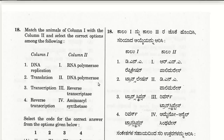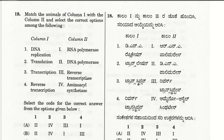The eighteenth question: match the animals of column one with column two. DNA replication is brought about by DNA polymerase. Translation is brought about by aminoacyl synthetase. Transcription is brought about by RNA polymerase. Reverse transcription is brought about by reverse transcriptase. So the correct choice is B.